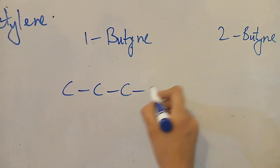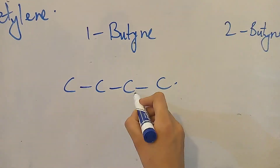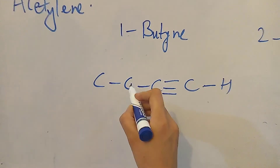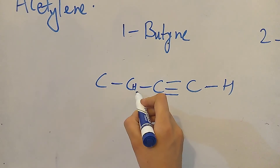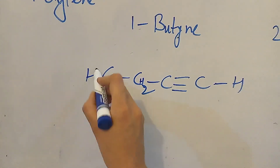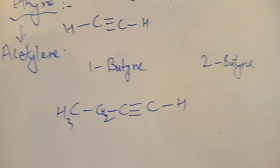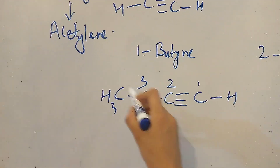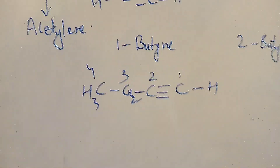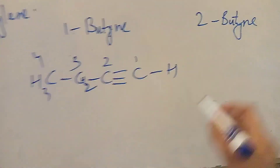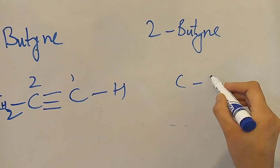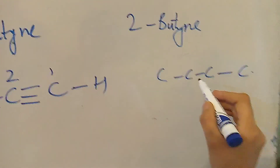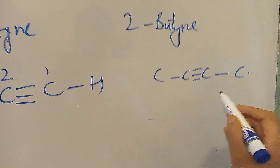When you draw the structure of 1-butyne, you will draw four carbons — carbon one, two, three, four — and place the triple bond at carbon one. We call it 1-butyne. For 2-butyne, you again draw four carbons, but the triple bond is drawn at carbon number two. No extra hydrogen comes with those carbons because the carbon's valency is already satisfied. Carbon always forms four bonds.